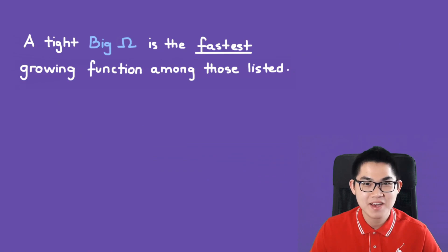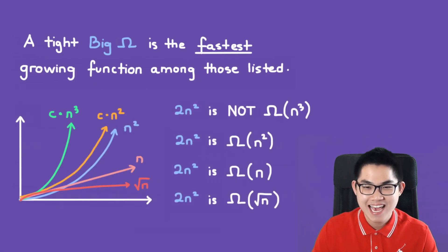What is tight big omega? Well, a tight big omega is the fastest growing function among those listed. And let's say you're also given four options and you have to select the one that is the tight big omega. So let's see.